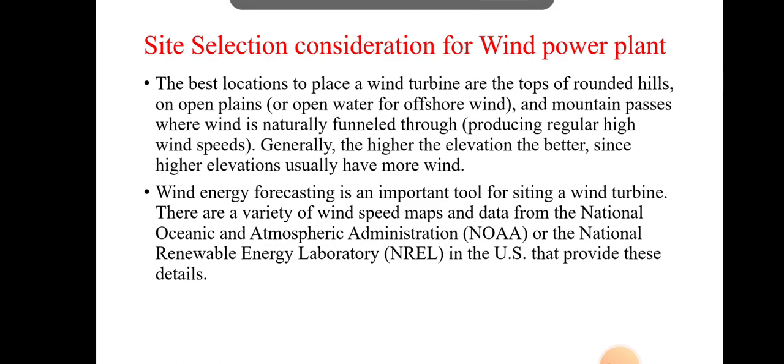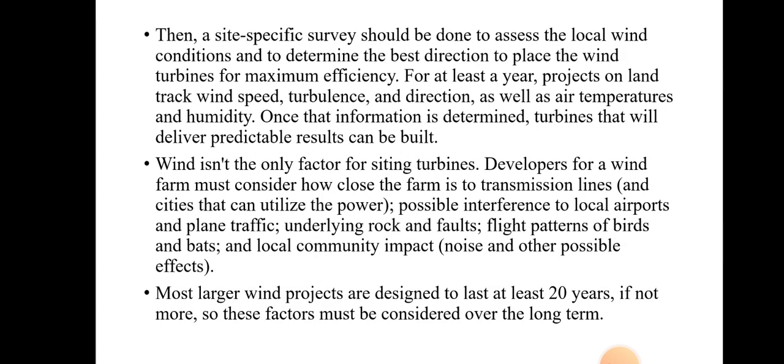You should be able to receive wind forecasting data for the position where you plan to install the wind turbine or wind power plant. The next consideration is that a site-specific survey should be done to assess local wind conditions and to determine the best direction to place the wind turbine for maximum efficiency. For at least one year, track wind speed, turbulence, and direction, as well as air temperature and humidity. If temperature or humidity differs significantly, efficiency of the turbines will decrease. Once that information is determined, a turbine that will deliver predictable results can be built.